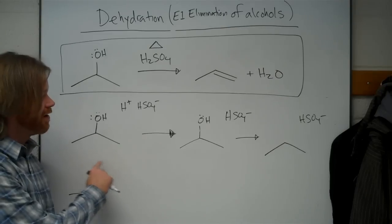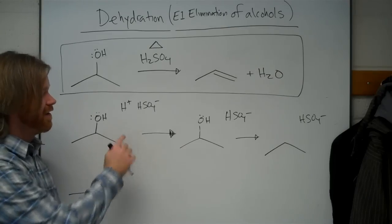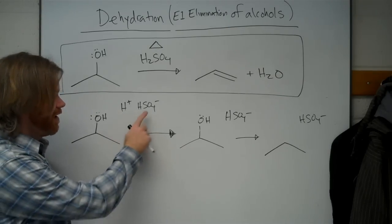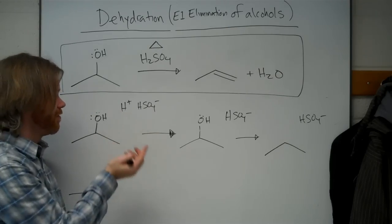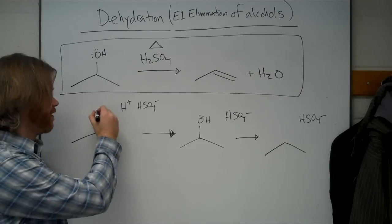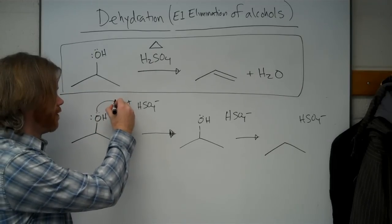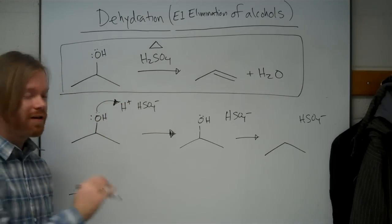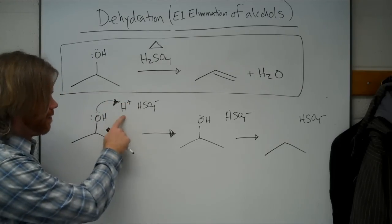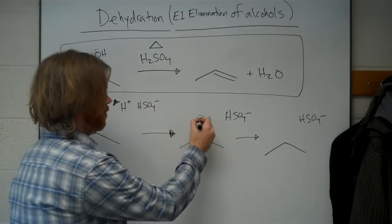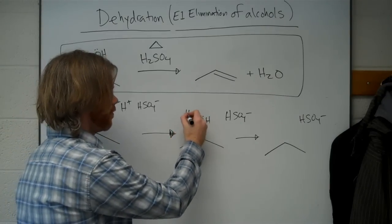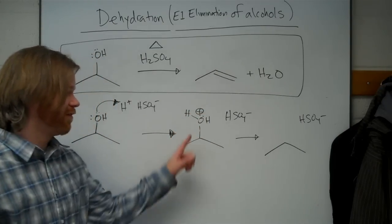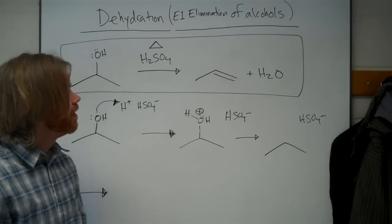So we're starting with our alcohol, we add acid. The trick to writing it: acid is a source of H+. So our alcohol gets the proton added to it, giving us essentially our water group attached here, which maintains its plus charge.